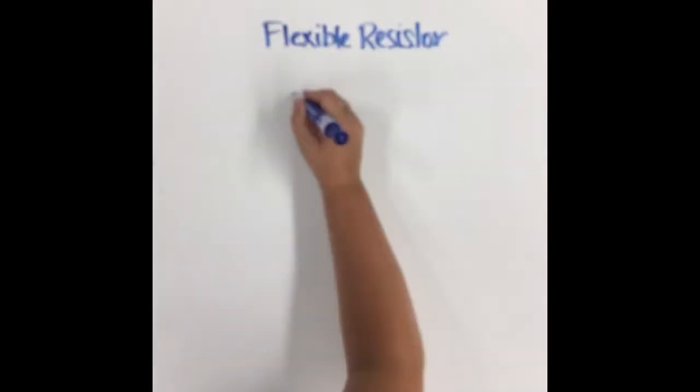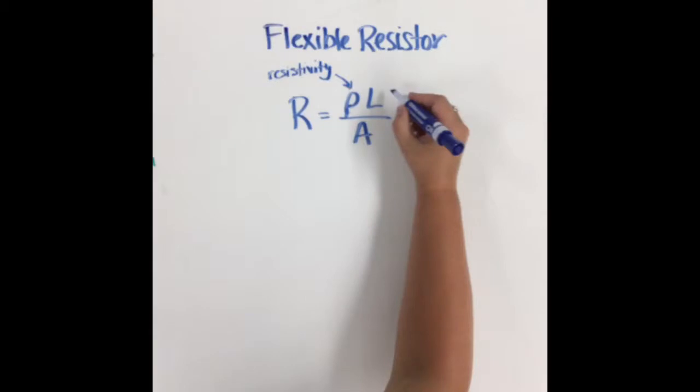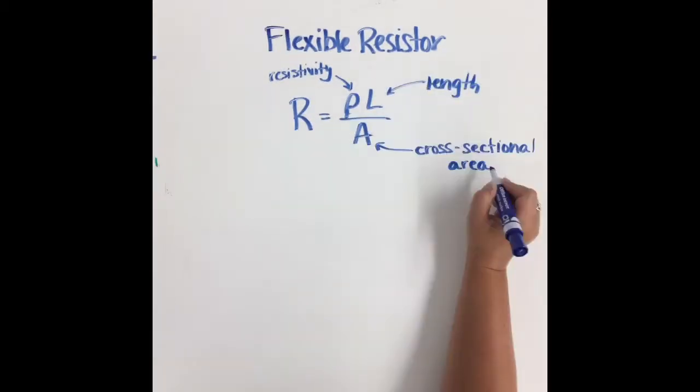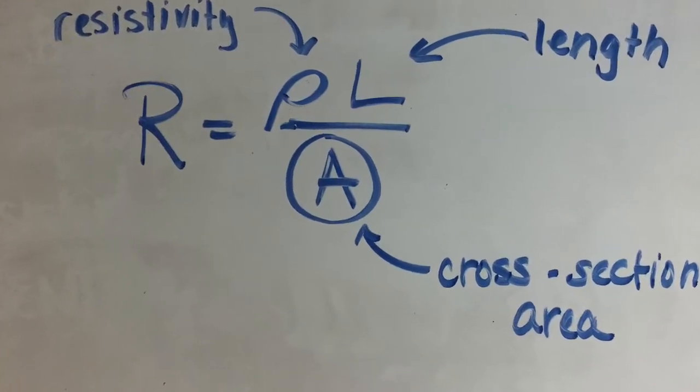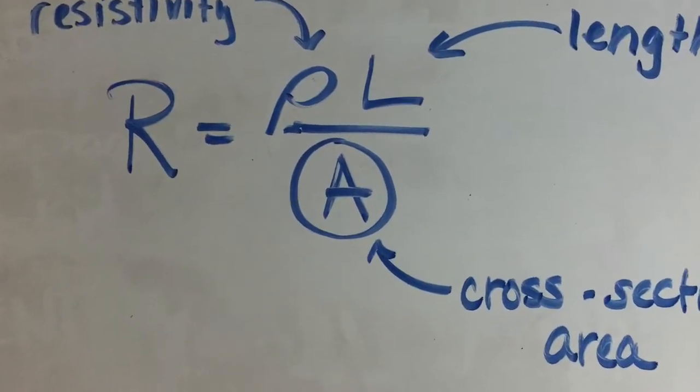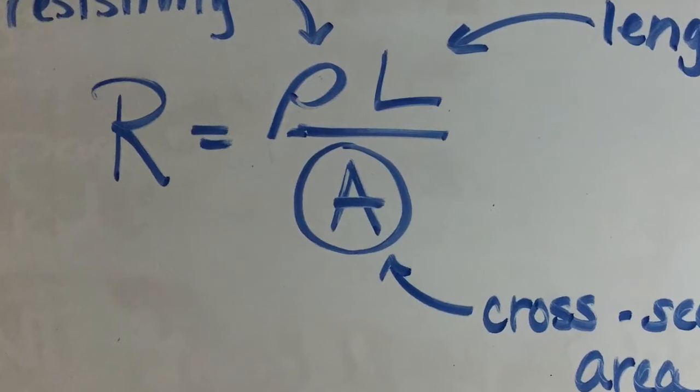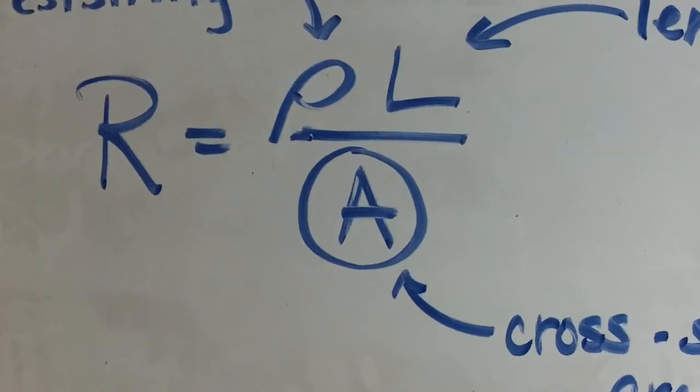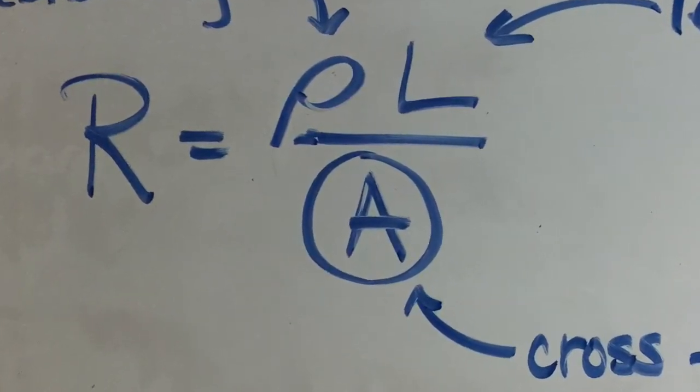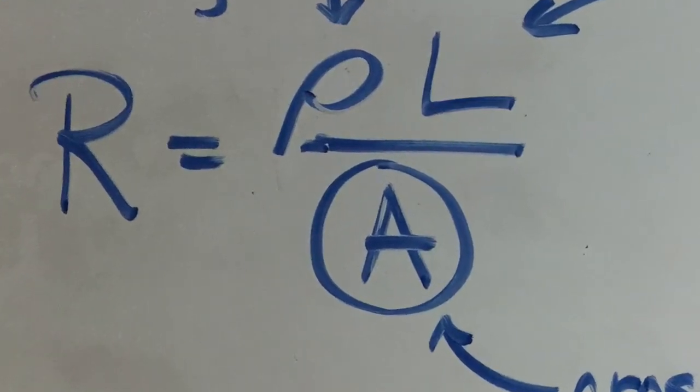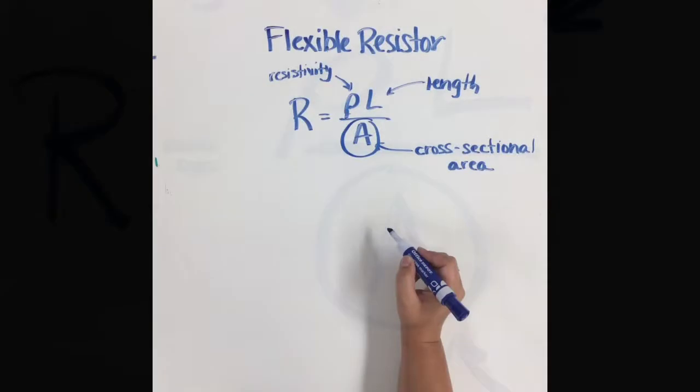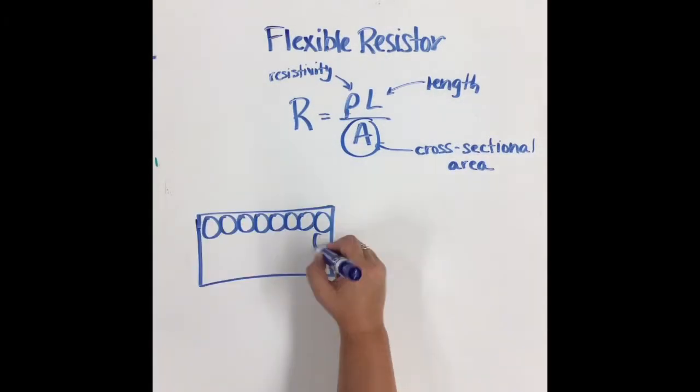Let's consider this formula: resistance equals ρL/A, or resistivity times length divided by the cross-sectional area. Resistivity is a property of the material, so let's assume we can hold this constant. We also know that the length is not changing because sparks are not formed between the ends of the resistor when bent.